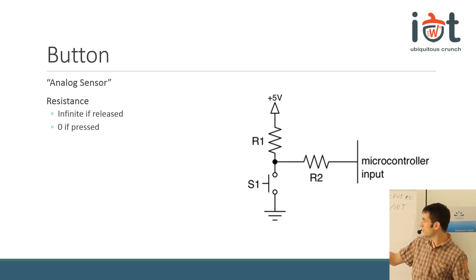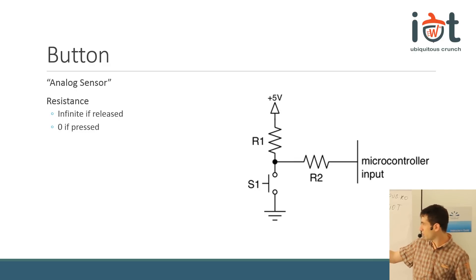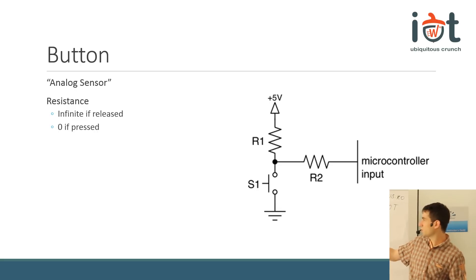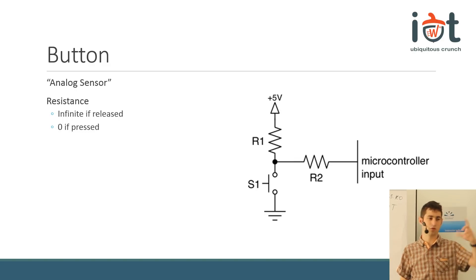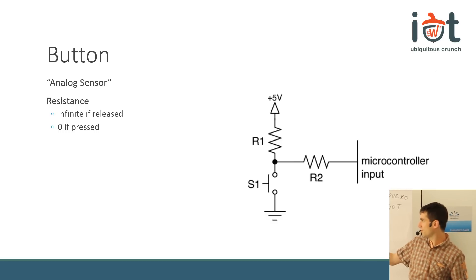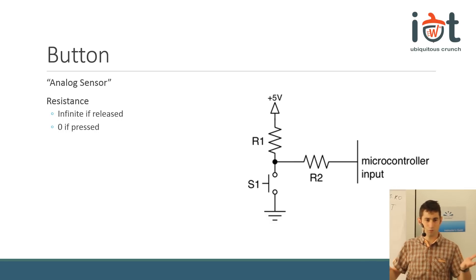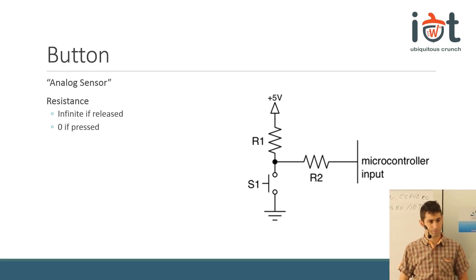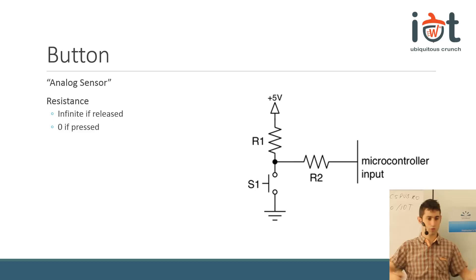Why is a button an analog sensor? If the button is released, the resistance between its two points is infinite. This resistance is so small in comparison that we measure almost the full voltage drop. Conversely, if the button is pressed, it becomes a cable - resistance becomes zero, and the input is directly connected to ground. This is why the button is an analog sensor, but it goes to extremes: its resistance is either zero or infinite.